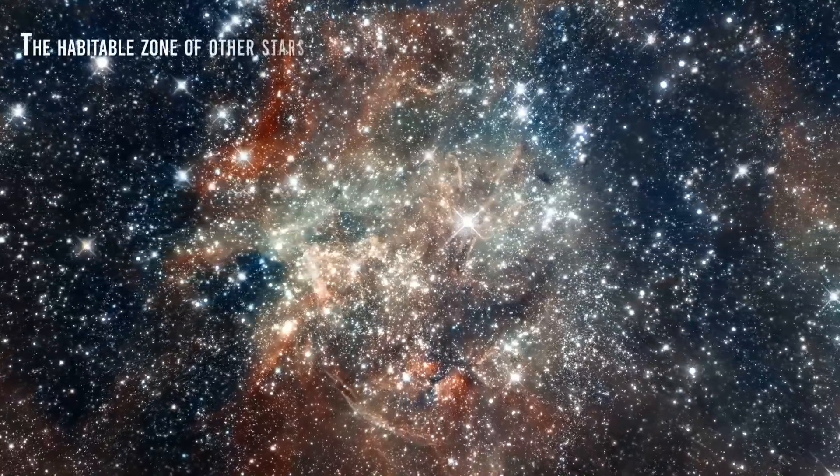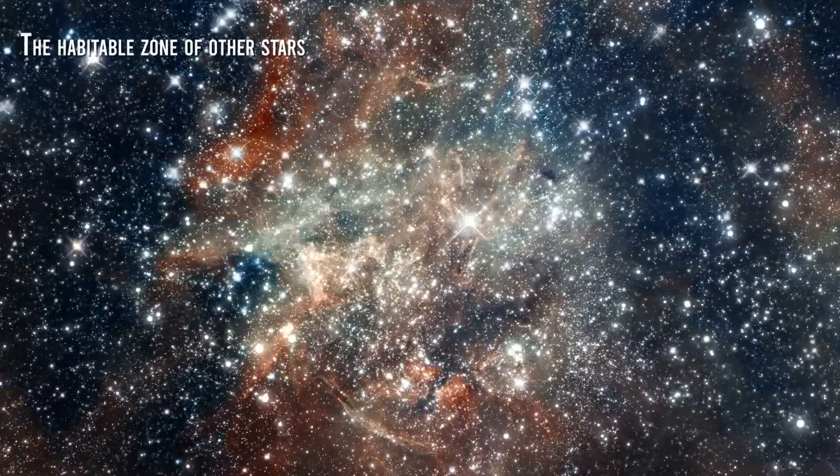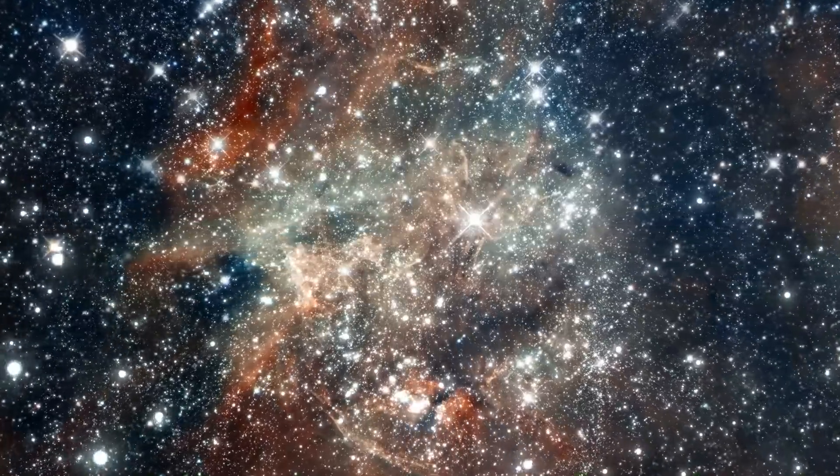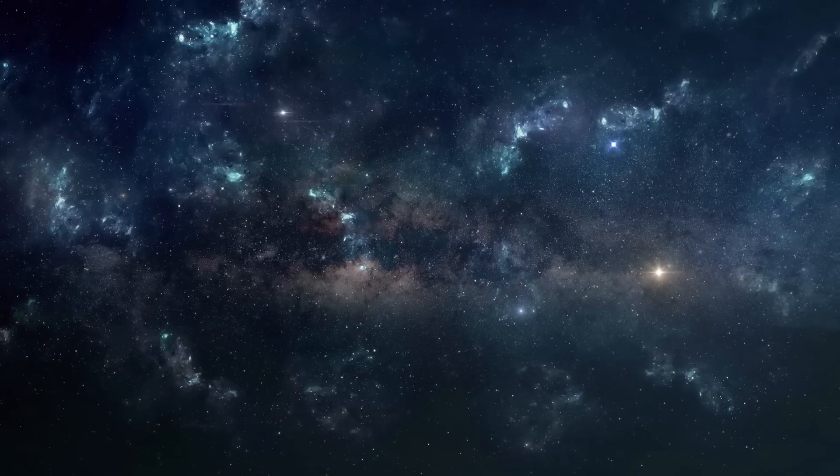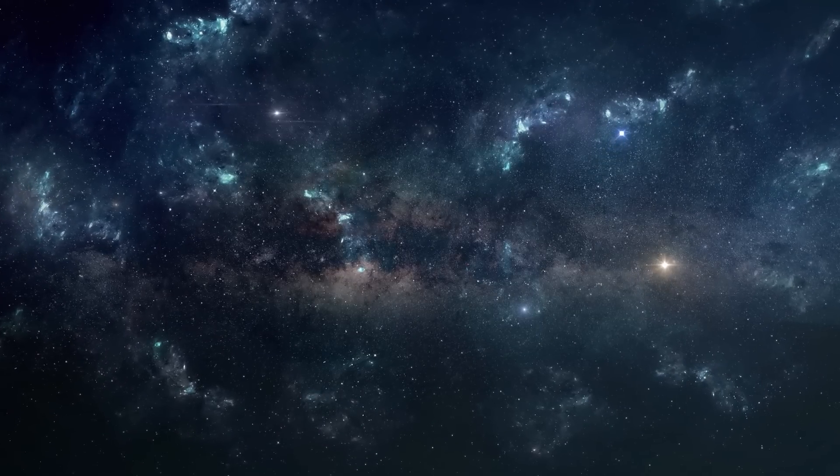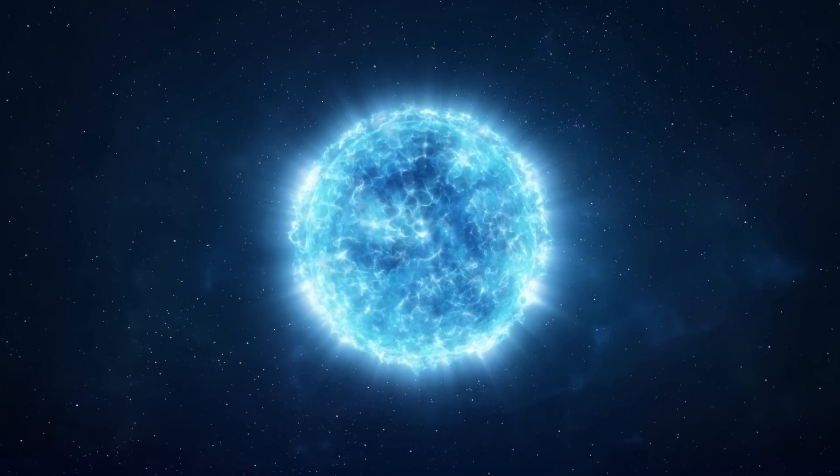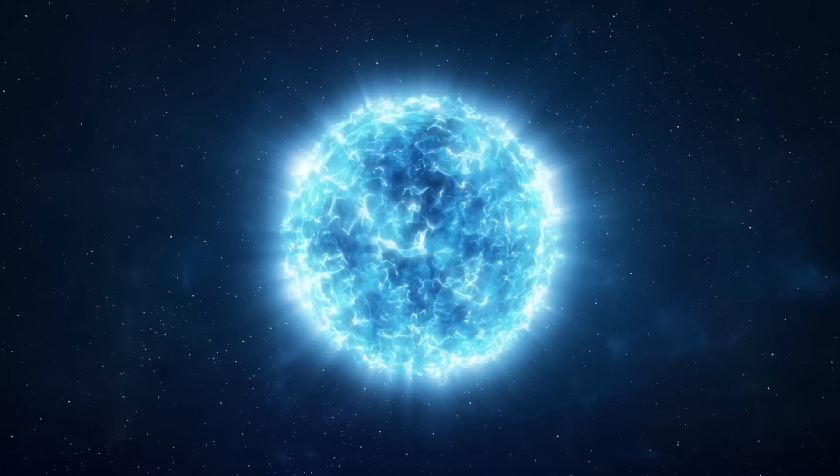The habitable zone of other stars. The main factor that determines the extent and characteristics of the habitable zone is stellar luminosity. As such, it varies significantly depending on the type of star in its life cycle. Being broader and more variable, the more luminous the star to which it belongs.